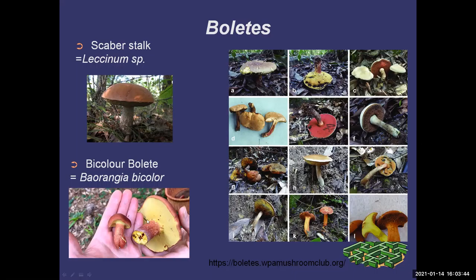The bicolor bolete is not a beginner mushroom — there are some poisonous look-alikes. One rule of thumb for this whole family: if they have red pores, they're poisonous. And if they stain blue when you touch or scrape them, you're best to avoid them. It doesn't mean all blue-staining ones are poisonous — the edible bicolor boletes do stain blue — but until you're really knowledgeable, you're best to avoid them.